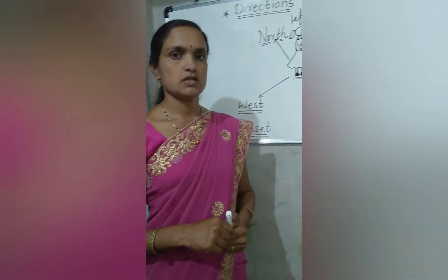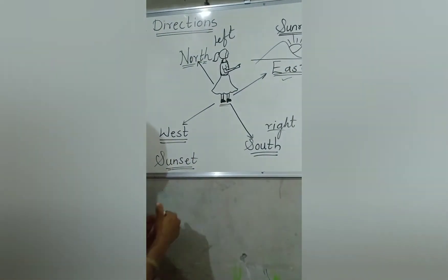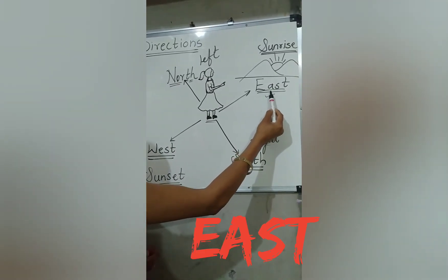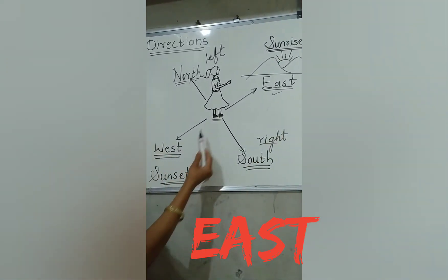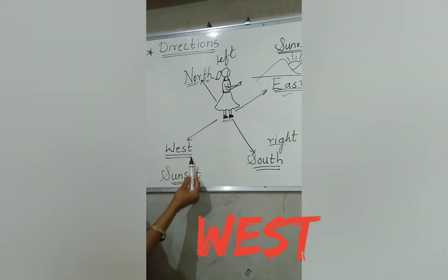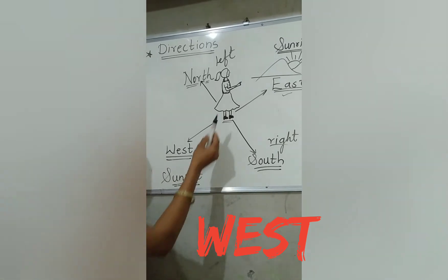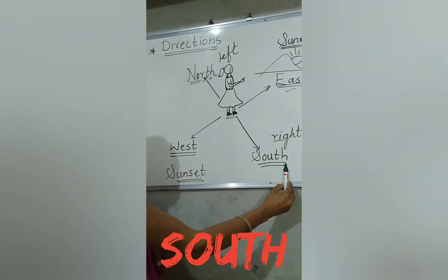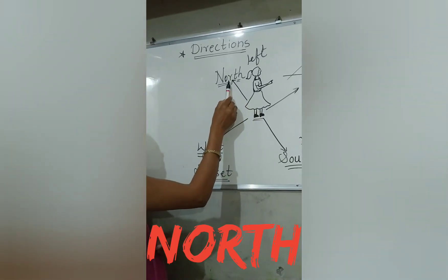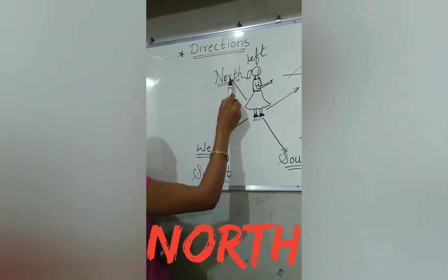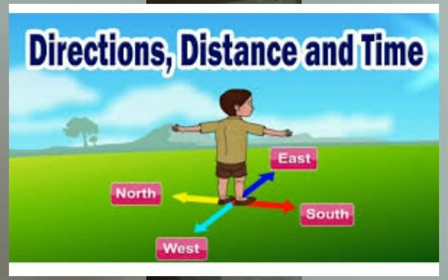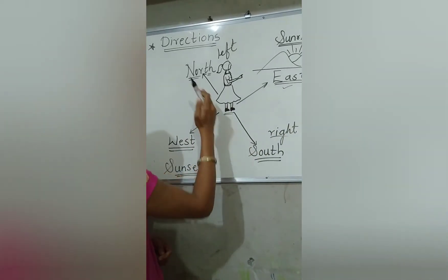Let's revise all four directions. The girl facing towards sunrise — this is East, E-A-S-T. At the back of the girl is West, W-E-S-T. The right hand shows South direction, S-O-U-T-H. The left hand shows North direction, N-O-R-T-H. Say after me: East, West, North, South. East, West, North, South.